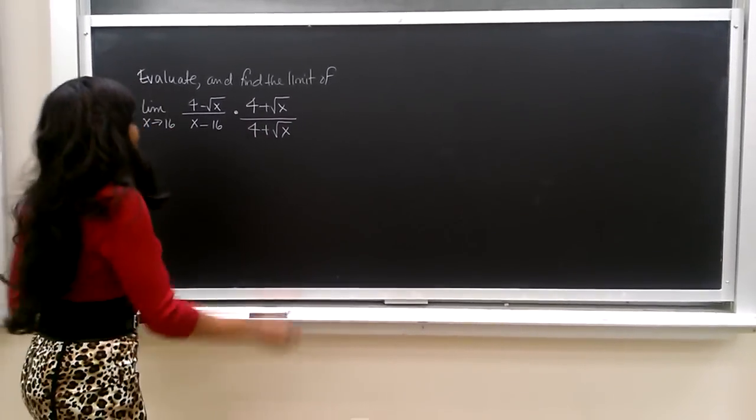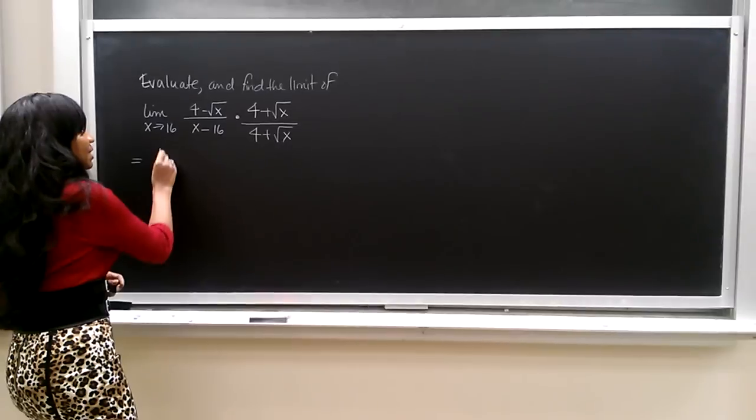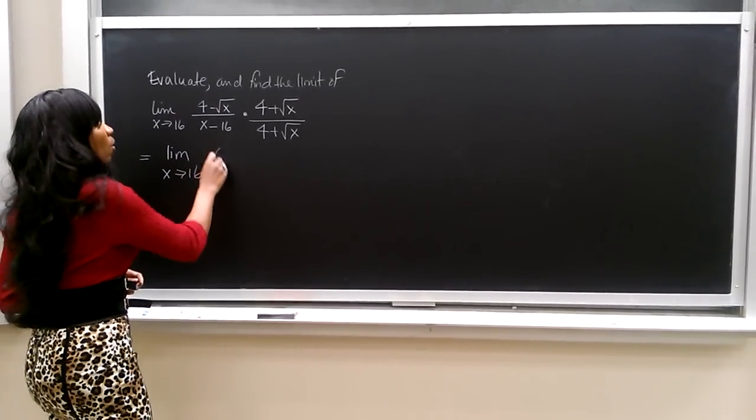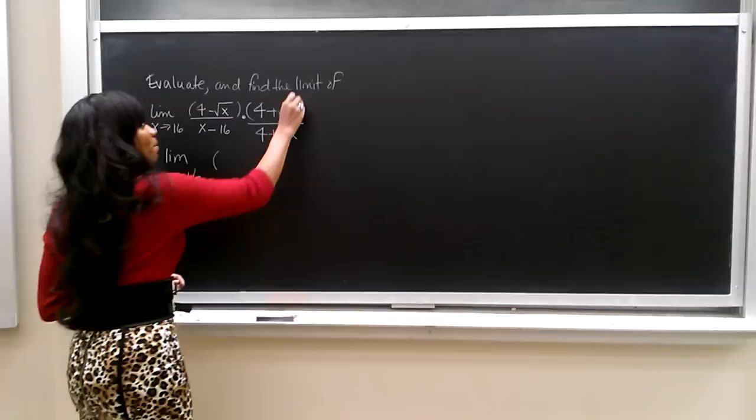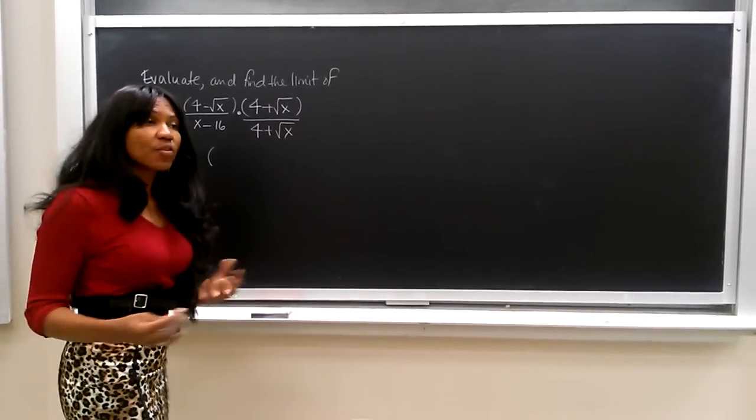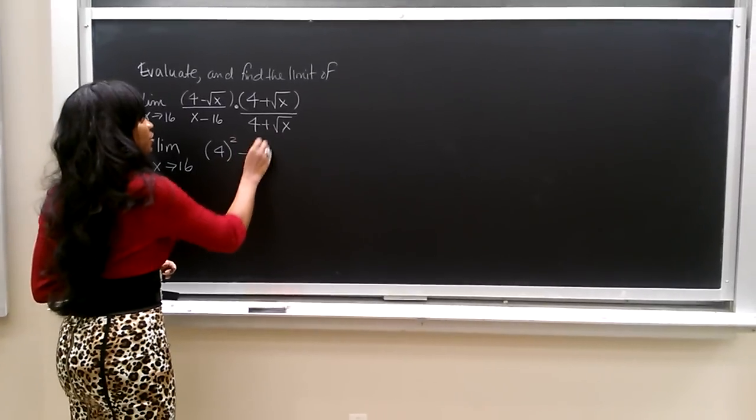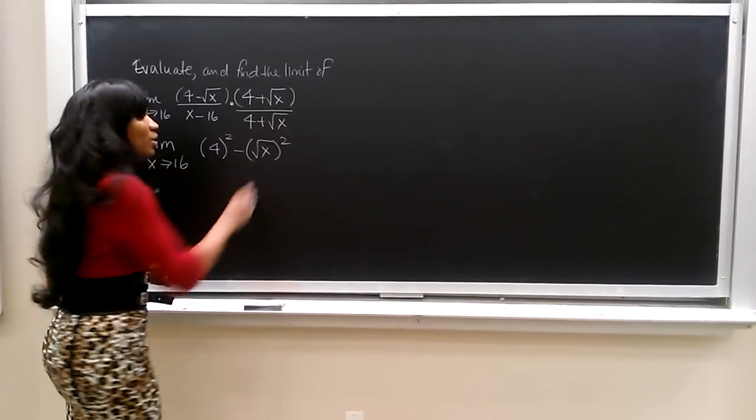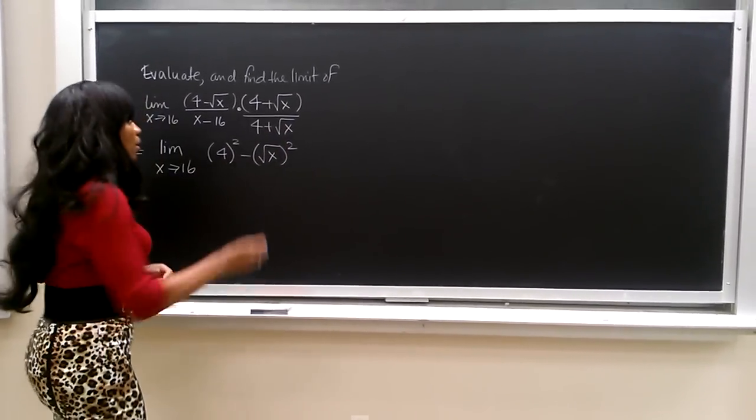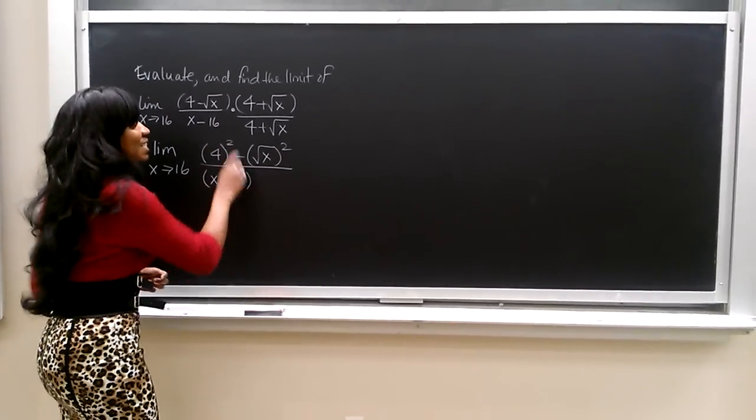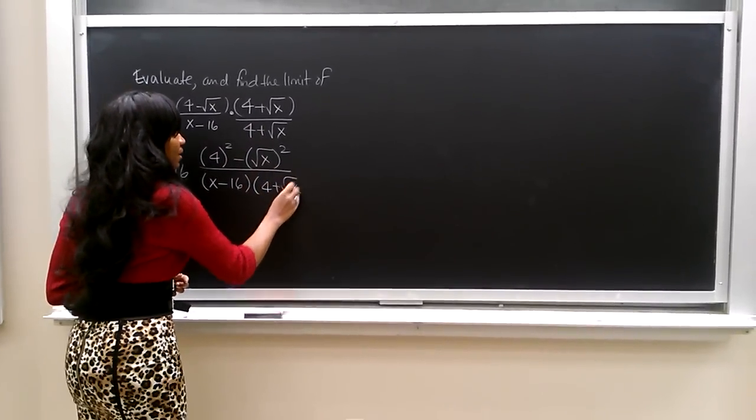This is equal to the limit as x equals 16. Now, we multiply or FOIL the numerator, and when we do that, we come up with 4 squared minus the square root of x squared, which is the difference of squares. We divide by x minus 16 times the quantity 4 plus the square root of x.